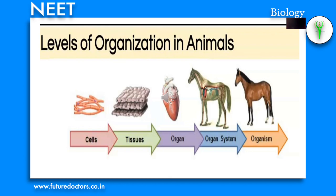Levels of organization in animals: all the members of the animal kingdom are multicellular, heterotrophic eukaryotes, but all of them do not exhibit the same pattern of organization of cells. The cells in their body are of several types, organized into many functional units of progressively increasing complexity. The first is the cellular level, where the body shows some division of labor among cells, which are remarkably independent and can change their form and function. It is found in sponges.